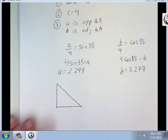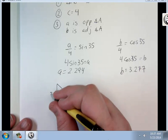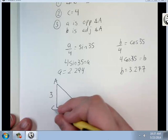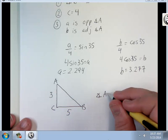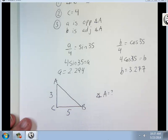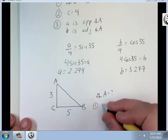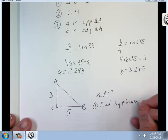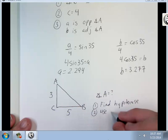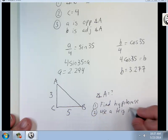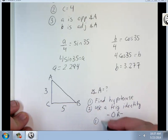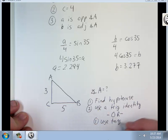So we're just going to do a quick one here. Let's say you had 3 and 5. What if I was just asking for angle A? Well, first, find hypotenuse. Then use a trig identity. Or, one step, use tangent. You can do either of those two methods.